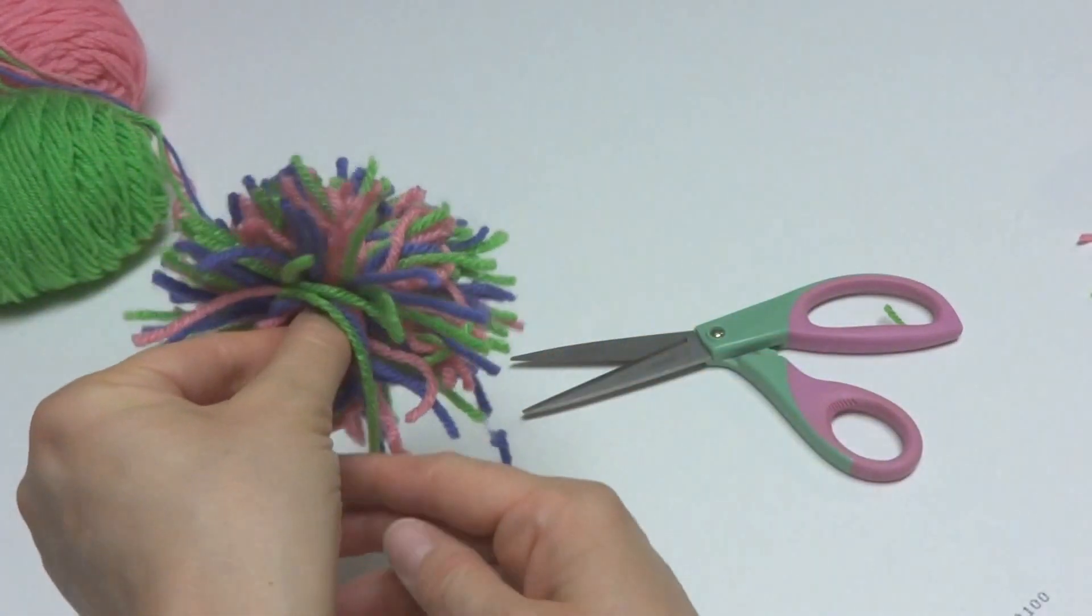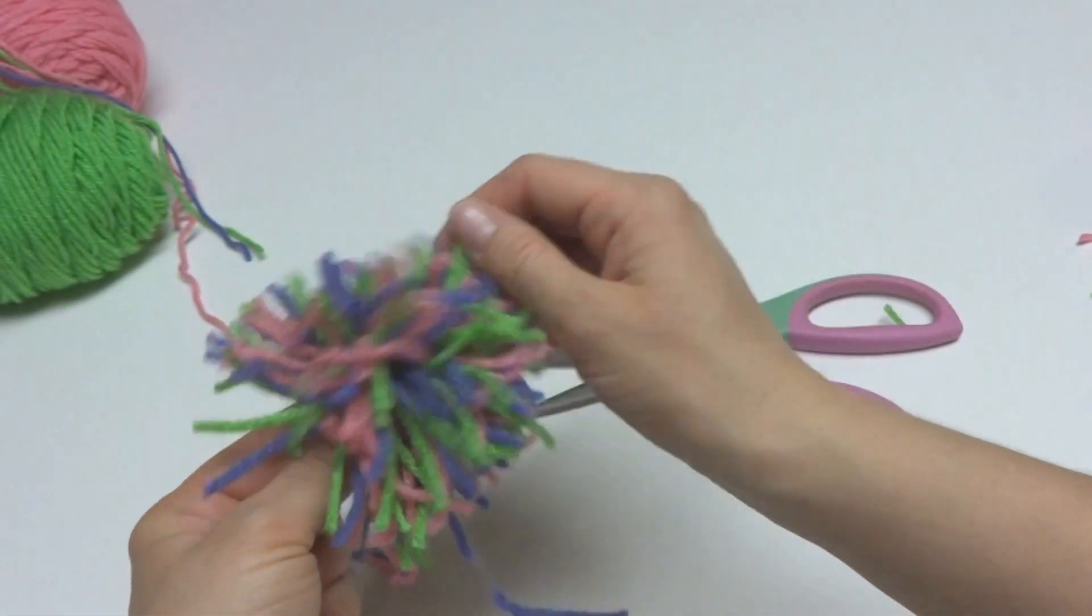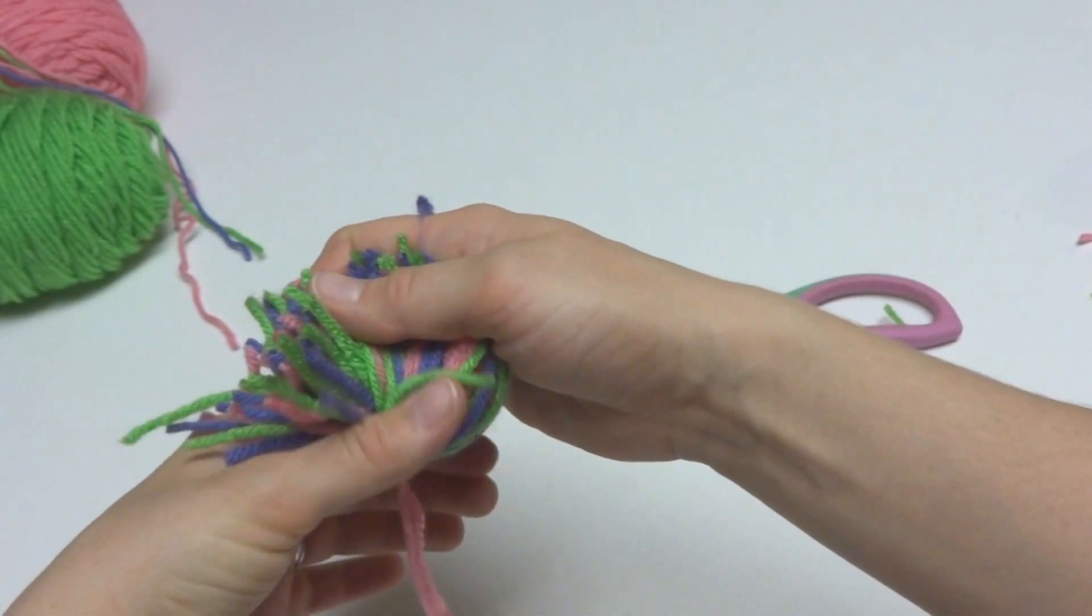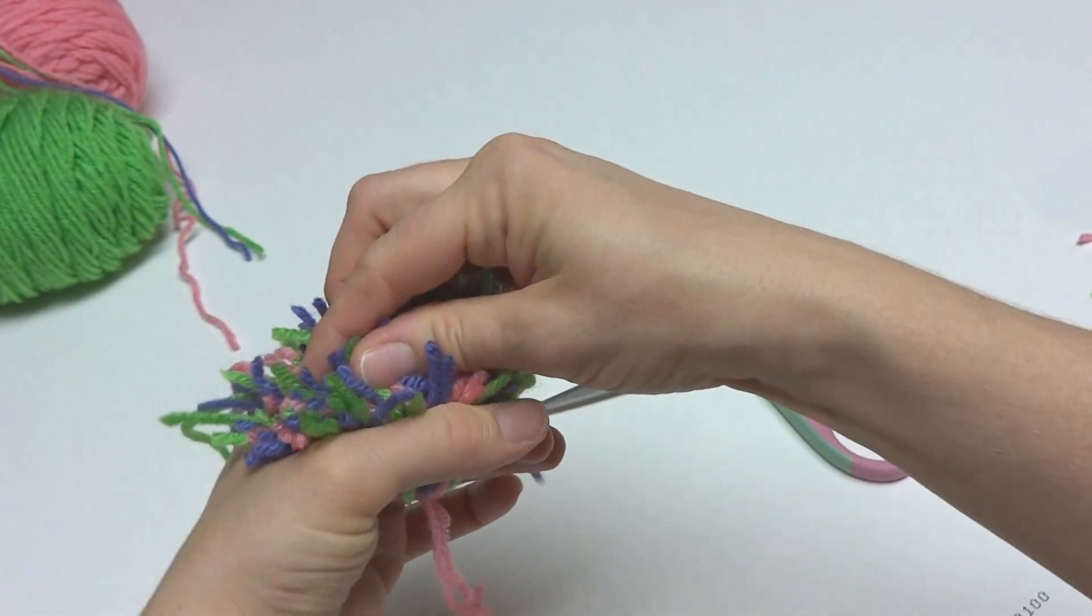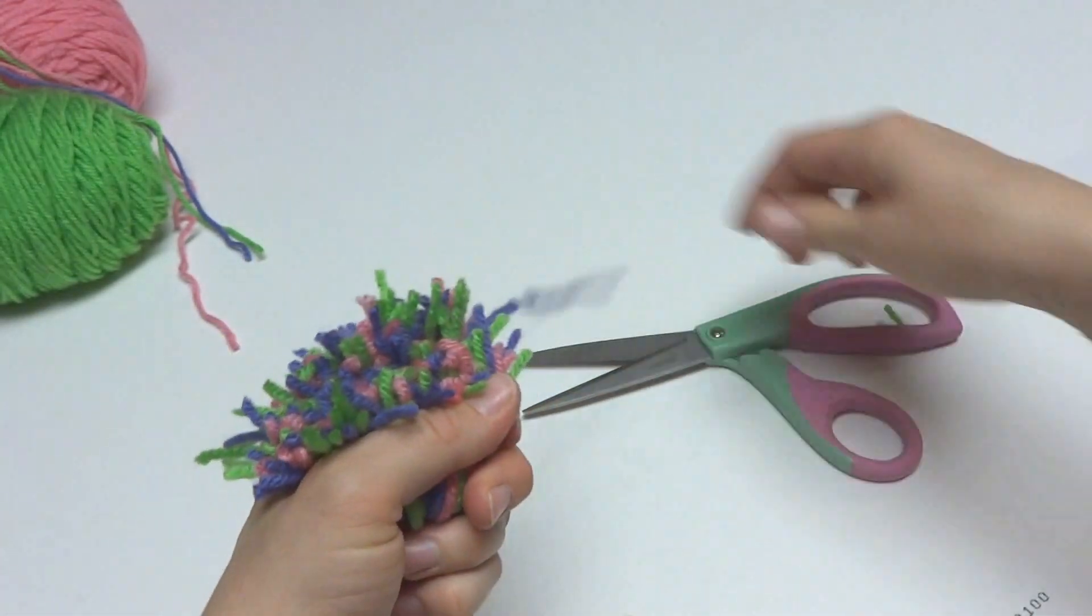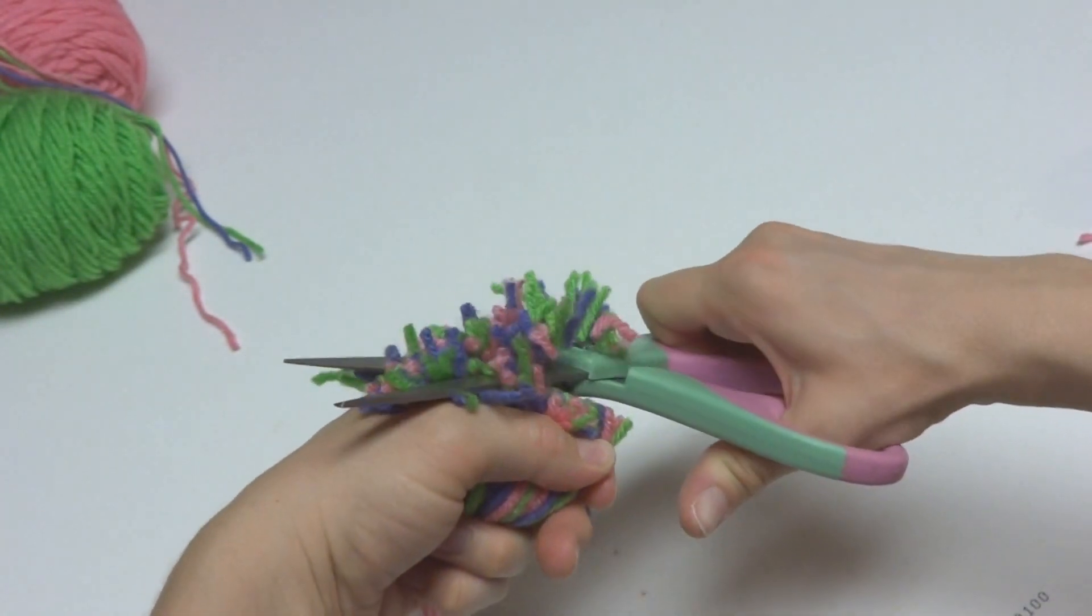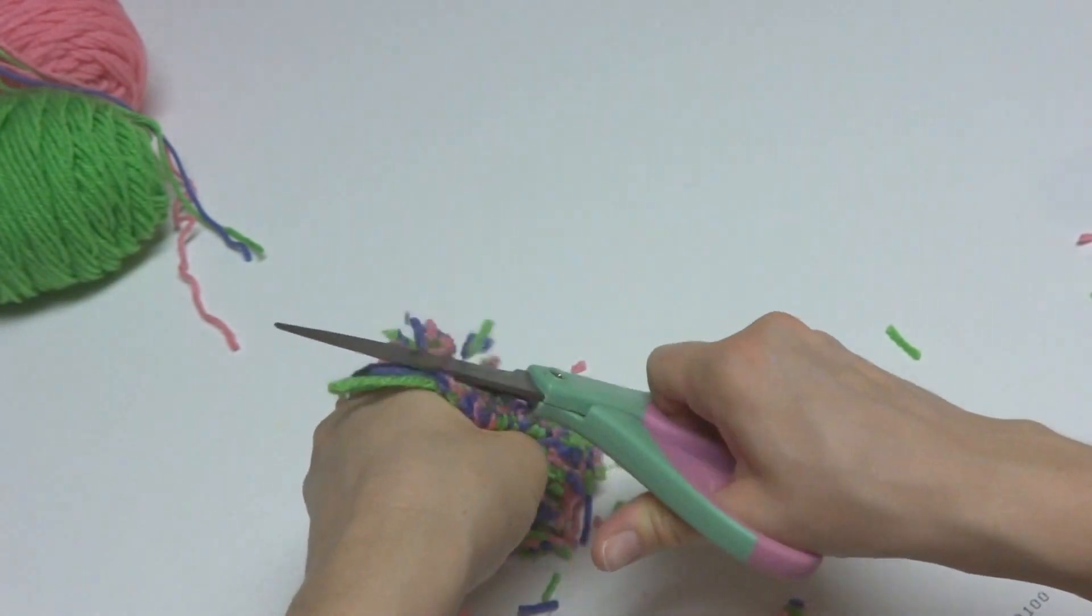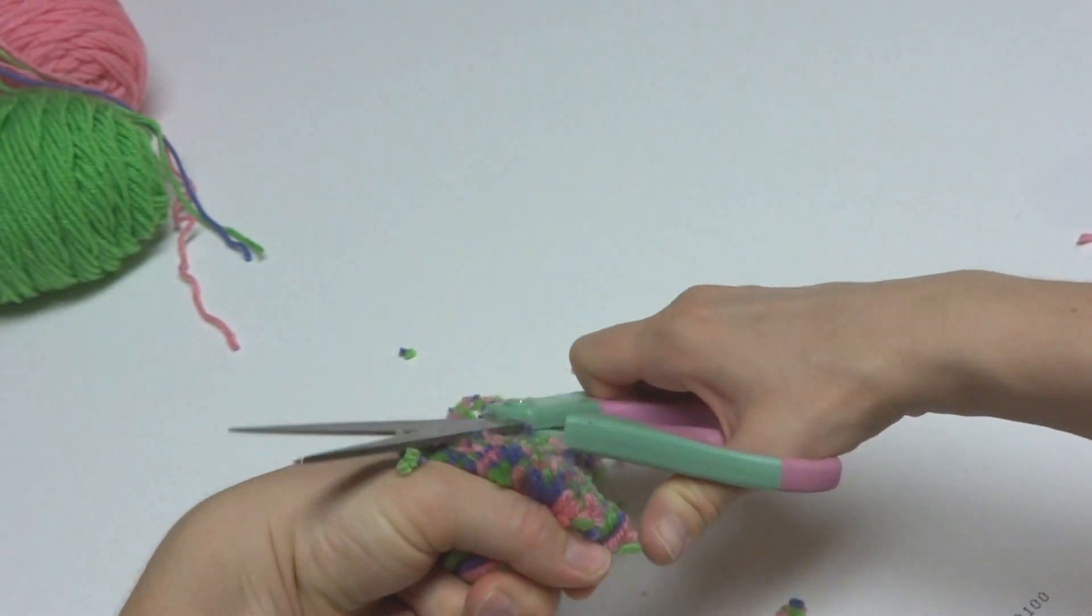So then what we're going to do is give it a little bit of a haircut. You can see the multicolors that we're showing and they look very nice together. So what I like to do is just grab the whole thing, just kind of pinch it like that. Then you can take your scissors and just give it a nice trim, nice and even, being careful not to cut yourself in the process.